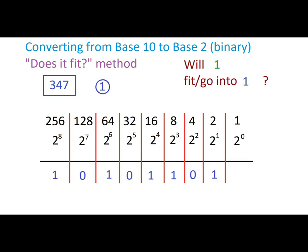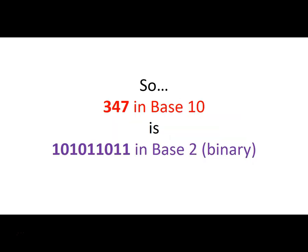Will 1 fit or go into 1? Yes, one time. So we'll place a 1 in that spot. 1 minus 1 is 0, that's good. That's where we should end, so that 0 makes us happy. So the decimal number 347, when we convert it to base 2 is 101011011. And that's using the will it fit method.